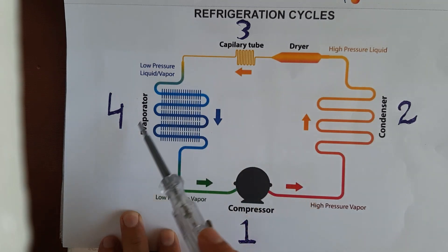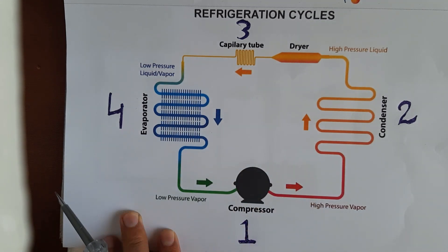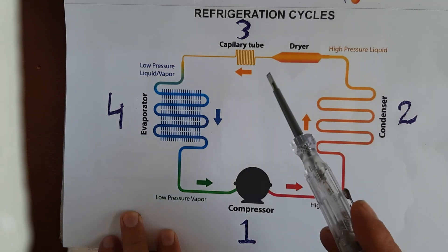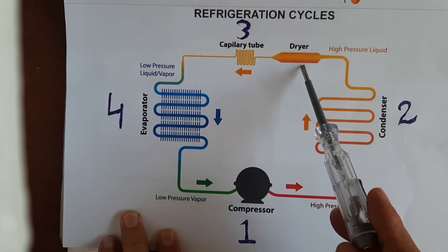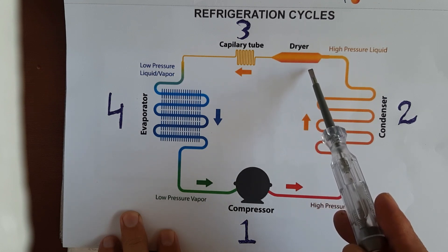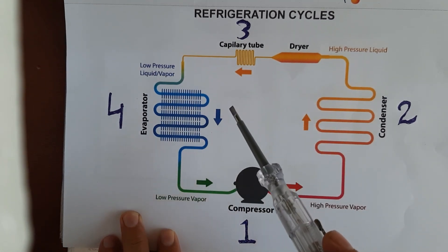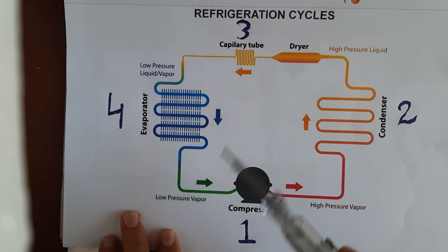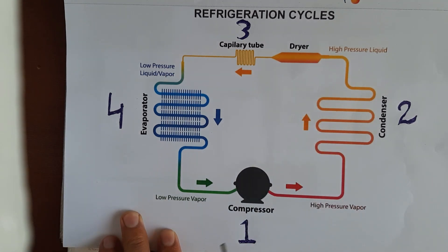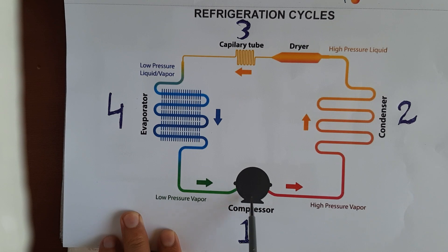So the four components are: number one — compressor, number two — condenser, number three — capillary tube, number four — evaporator. If someone asks in an interview what the refrigeration cycle is, simply answer with these four things. Note that the dryer is not part of the cycle; it is a safety component.